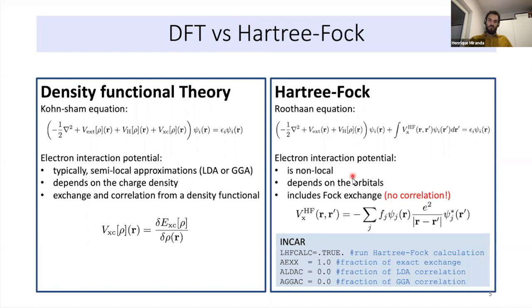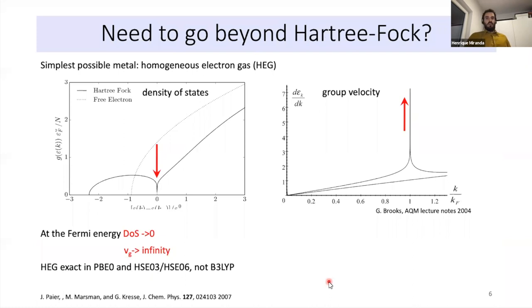To do a Hartree-Fock calculation in VASP, set LHFCALC = True to run the HF calculation, and choose the percentage of exact exchange — a value of one means it is included exactly as written in the equation. You also have to set the fractions of LDA correlation and GGA correlation to zero, which I will explain shortly.